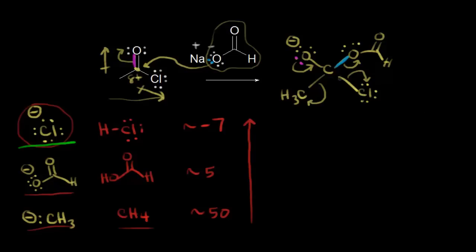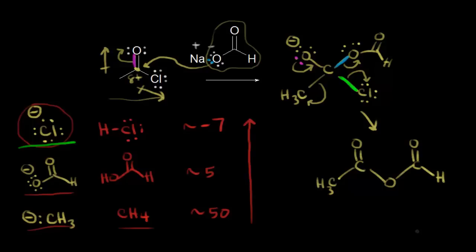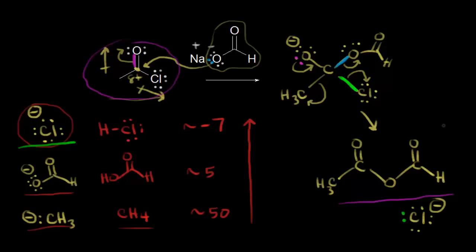Going back to our mechanism: the chloride anion is going to leave. These electrons in green come off onto the chlorine. Drawing our final product: when we reform our carbonyl, we have CH3 on the left, and on the right an oxygen bonded to a hydrogen from the formate. This is our final product, with the chloride anion as the leaving group. We formed an acid anhydride — specifically, acetic formic anhydride. So we formed an acid anhydride from an acyl chloride, with the chloride anion as the most stable leaving group.